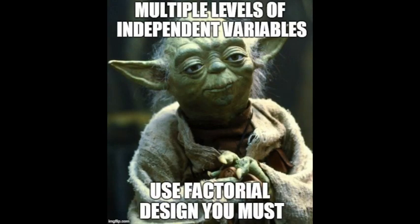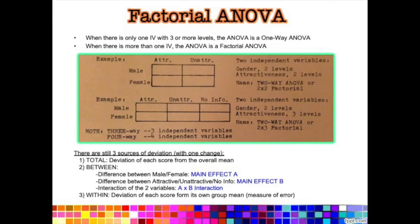We do a factorial ANOVA when we have two or more independent variables, each with multiple levels. For example, looking at a block of cells with two independent variables: on the rows you see male and female, so the independent variable there is gender with two levels. And then on the columns you see attractive and unattractive, so attractiveness is our second variable with two levels.